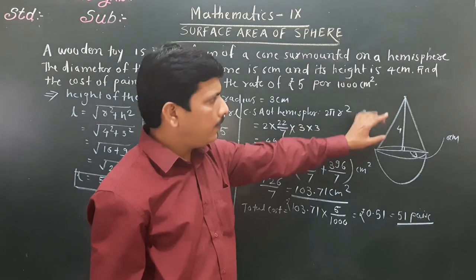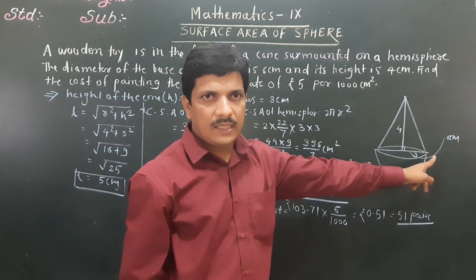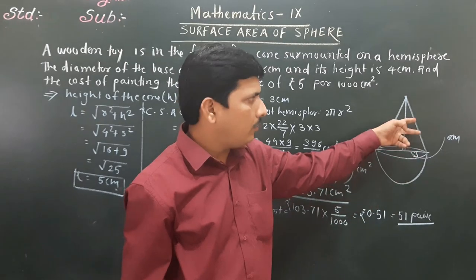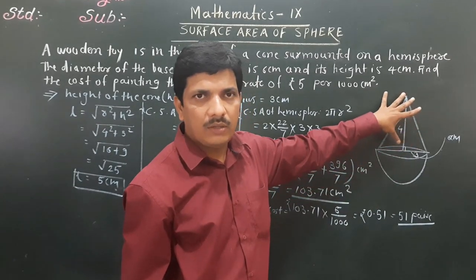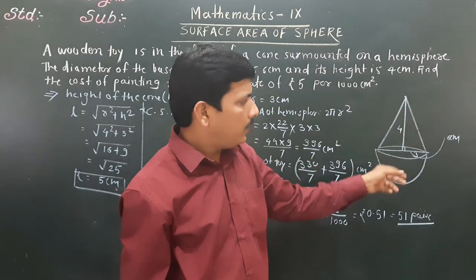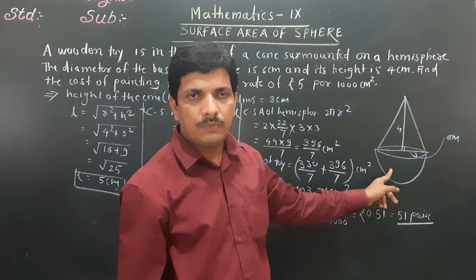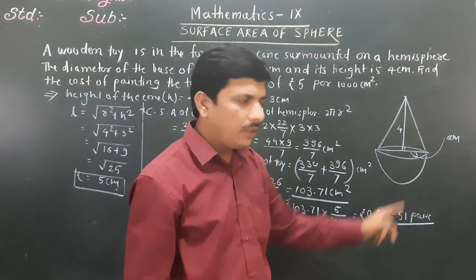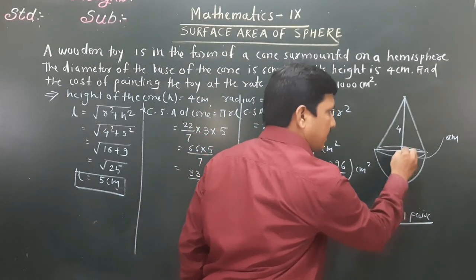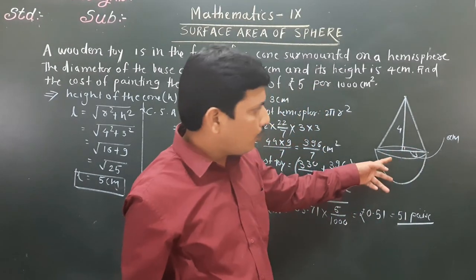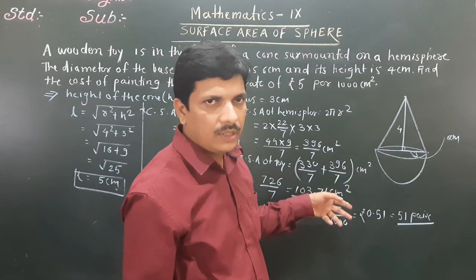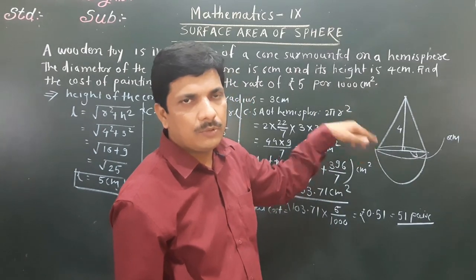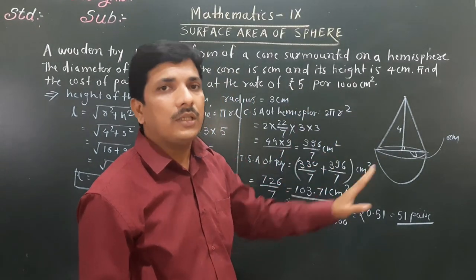To summarize: find slant height using radius and height of the cone. Then find curved surface area of the cone and curved surface area of the hemisphere using 2πr². Add them together and multiply by rate (Rs. 5), then divide by 1000 since the rate is per 1000 cm².